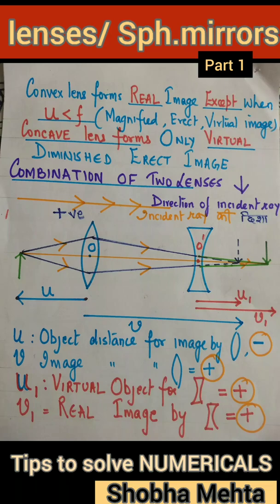Welcome to my channel Learn with Shobha Mehta. In Class 12 NEET and JEE Mains exams, many numericals on spherical mirrors, lenses, and two or more lens-mirror combinations are asked.